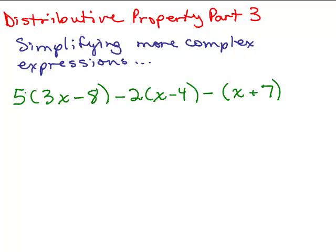We're going to start by doing the distributive property. There are three places I have to do the distributive property. We have the 5, which needs to be distributed to both of these terms. The negative 2 — key is to think of this as negative 2, not just 2 — is going to be distributed. And this is just a minus sign that's going to be distributed. Remember, a minus sign could be thought of as a negative 1. You could also change all subtraction to adding the opposite, but I think sometimes that's a little bit more cumbersome for a lot of students.